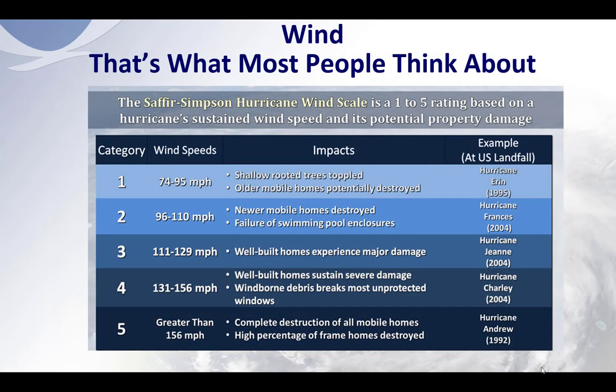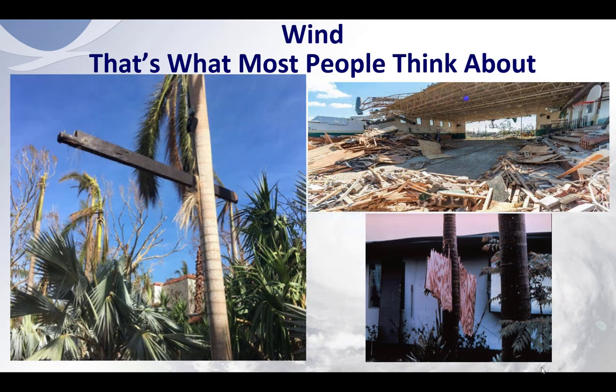Wind — that's what most people think about. When people think about hurricanes, they think about the category, one through five of the Saffir-Simpson hurricane wind scale. Below you can see the wind speeds associated with each category. Now we all know wind causes a lot of damage, and that's what most people think about when you hear hurricane. People look at these photos and think wind is the primary hazard.